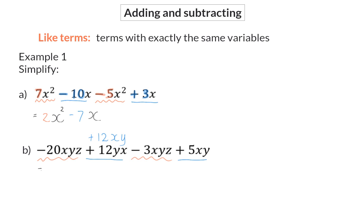When I now start simplifying, I will focus on my xyz terms by looking at their coefficients. So that will be minus 20 minus another 3, which will give me minus 23xyz. Now I want to determine the number of xy terms, and for that I use the coefficients of xy, which is plus 12 plus another 5. This will give me 17xy terms.